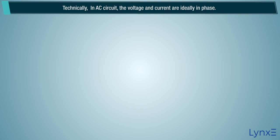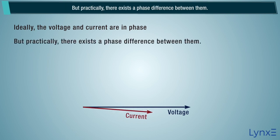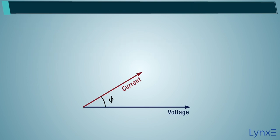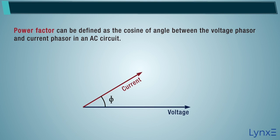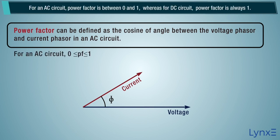Technically, in an AC circuit, the voltage and current are ideally in phase. But practically, there exists a phase difference between them. The cosine of this phase difference is termed as power factor. So, power factor can be defined as the cosine of the angle between the voltage phasor and current phasor in an AC circuit. For an AC circuit, power factor is between 0 and 1, whereas for a DC circuit, power factor is always 1.